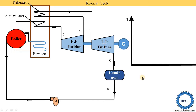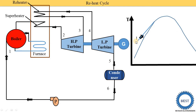Next we draw the TS diagram. On the Y-axis, temperature is there and on the X-axis, entropy is there. This is the saturation curve. This is point number one — the boiler inlet point. Process one to two is the heat addition. Then after that, expansion is carried out — isentropic expansion, so we draw a vertical line. This is point number three. After point three, the steam is again heated, meaning the temperature of the steam is increased.